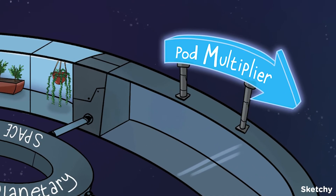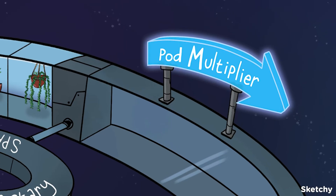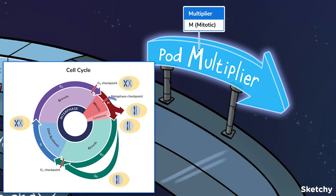And we're off to the multiplier — this is where the space pods get built. Remember that during the M phase, a cell goes through nuclear and cytoplasmic division, creating two daughter cells that share the same number of chromosomes. See our video on mitosis for a whole lot more about this.